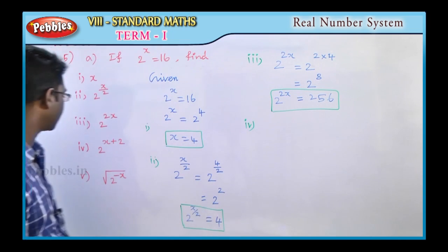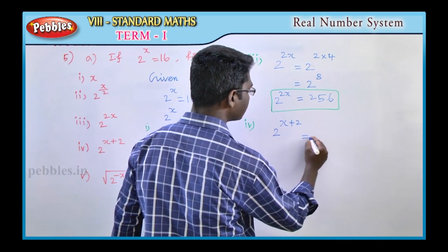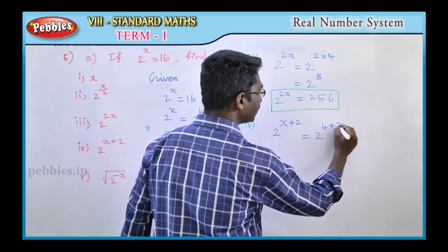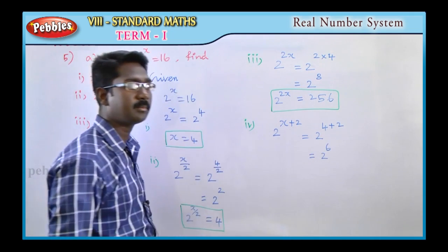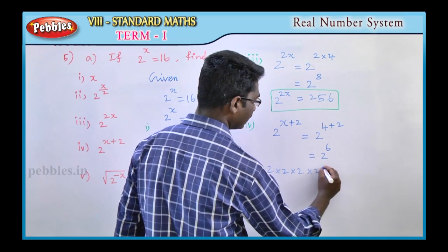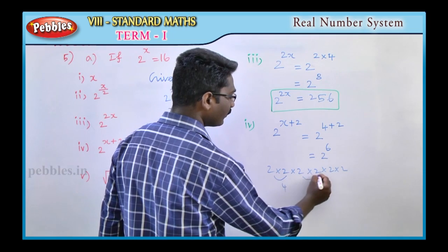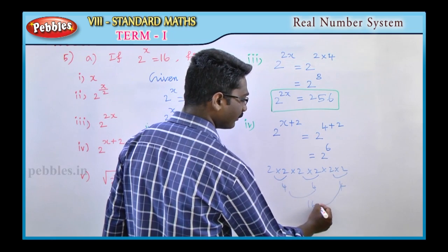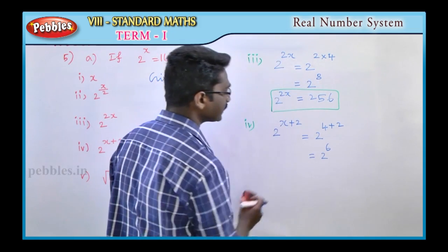Fourth part: 2 power x plus 2. Substitute x equals 4: 2 power x plus 2 is equal to 2 power 4 plus 2, that is 2 power 6. Now 2 power 6: 2 × 2 × 2 × 2 × 2 × 2, six times, gives 16 into 4 equals 64. So the total answer is 64.